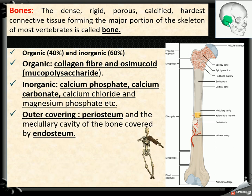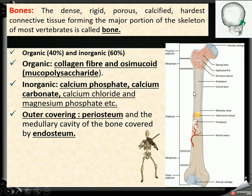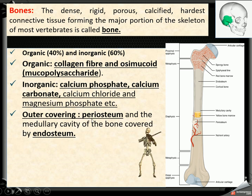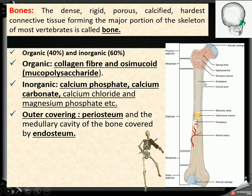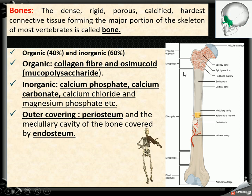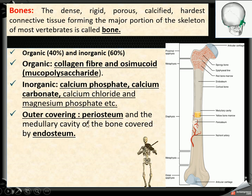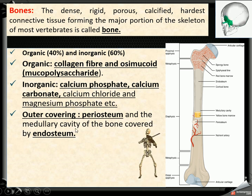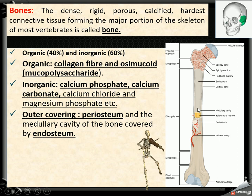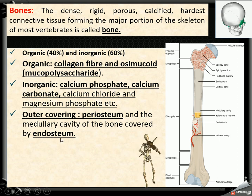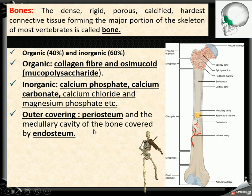The outer covering of bones is called periosteum. And the covering of the medullary cavity — also called the bone marrow cavity — is called endosteum. Endo means inner.